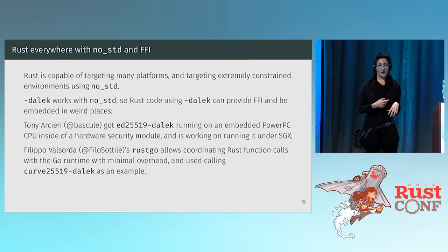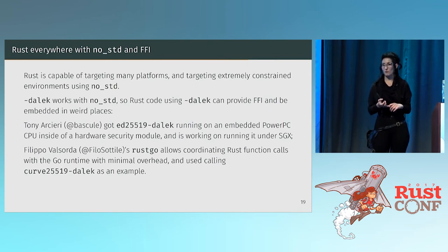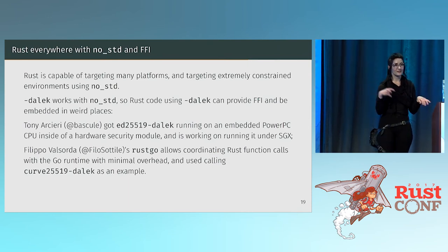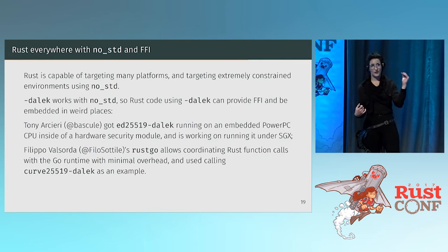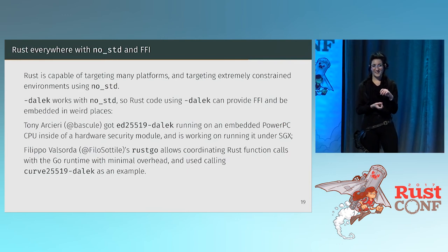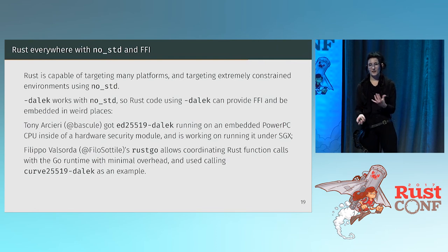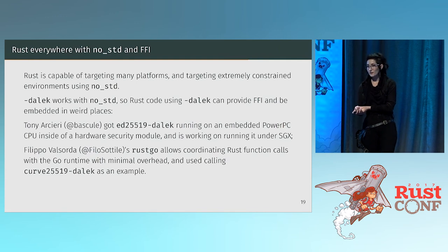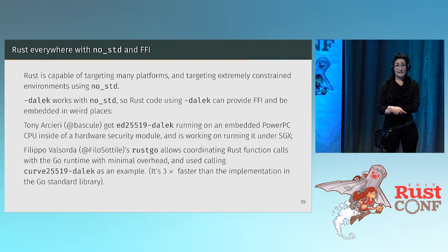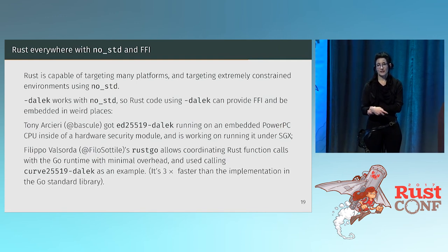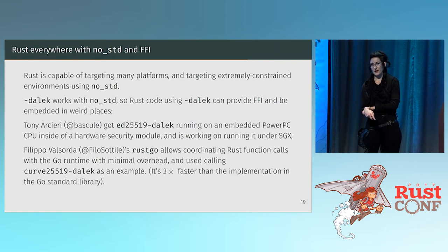Filippo had a recent blog post that made it to the top of both the Golang and Rust subreddits. He has a thing where he's calling Rust from Go with minimal overhead, and he used Dalek as an example. Interestingly, this is three times faster than calling the Curve25519 library in pure Go that's in Go's standard library.